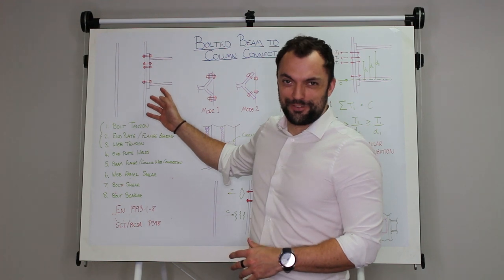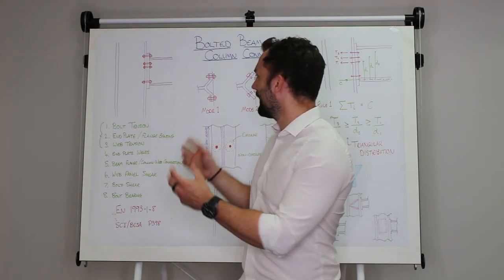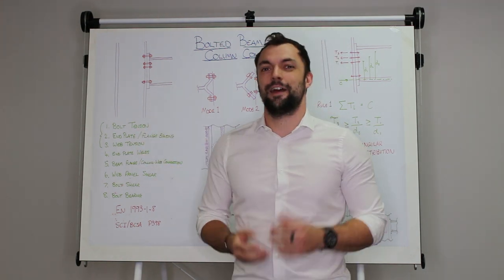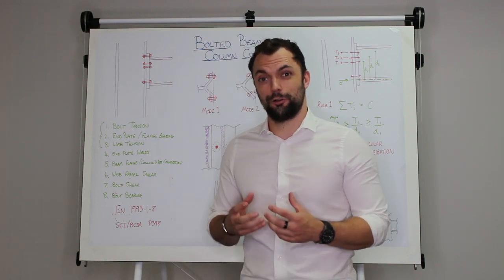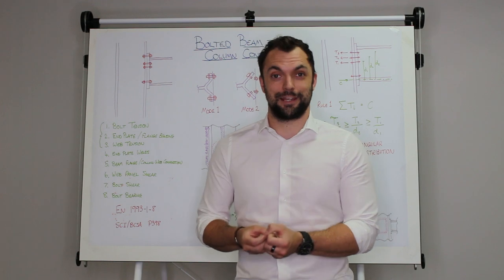Now there are lots of different components in this bolted connection that are pulling, pushing, twisting, and shearing. The idea is you've got to check every single one of those components because the whole joint will fail when the weakest link fails.